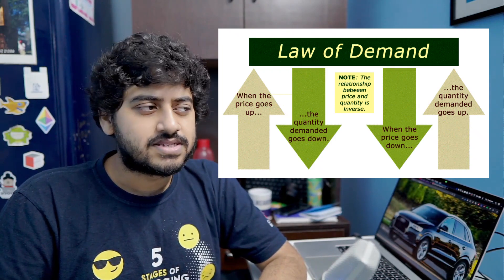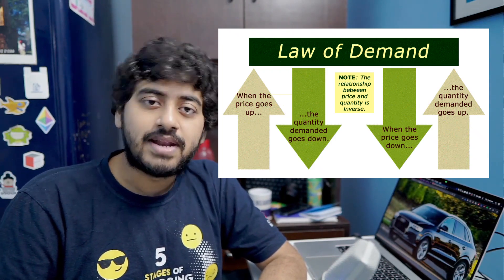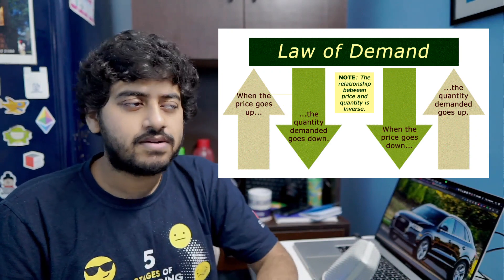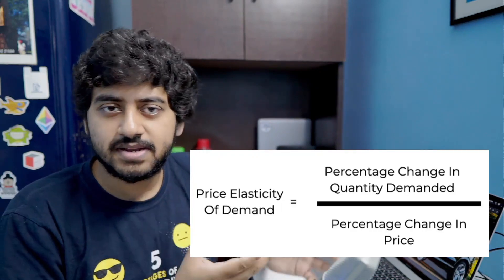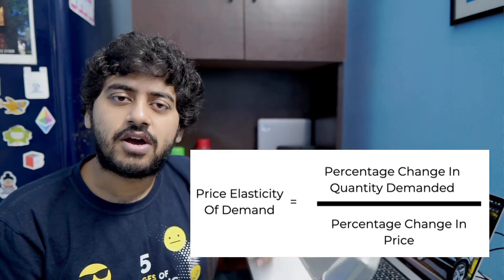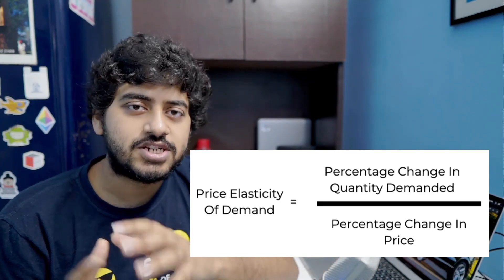There's something called the basic law of demand in economics, which says that if the price of things is increased then fewer people will buy it, and if the price is decreased then more people will buy it — which of course makes sense. All of this is mathematically represented as the price elasticity of demand, which measures how much change in quantity sold results from a given change in price.